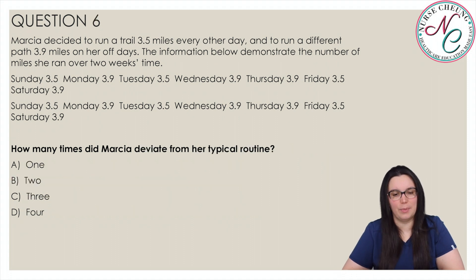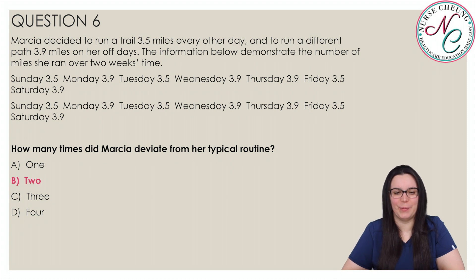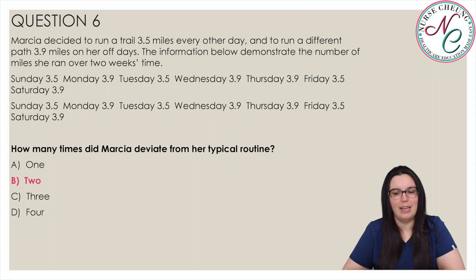Using that same example, how many times did Marcia deviate from her typical routine? The correct answer is B, 2. The information demonstrates that Marcia deviated from her usual running schedule twice, both on Thursday. The other days she adhered to her usual schedule.